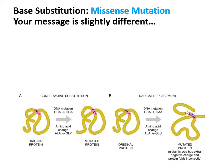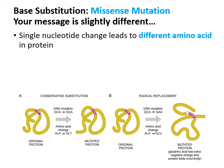For base substitution, the first option is a missense mutation — circle that term. What this means is that a single nucleotide — an A, T, G, or C — has been changed, and now when transcription and translation occurs of that sequence, there's a different amino acid than was supposed to be in the final protein product. This missense mutation can either be conservative or radical.